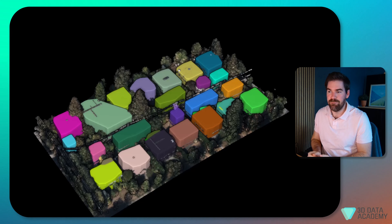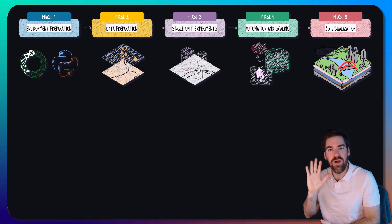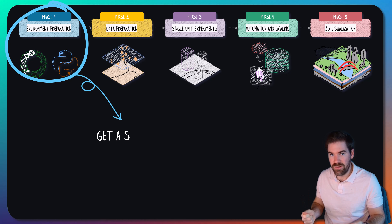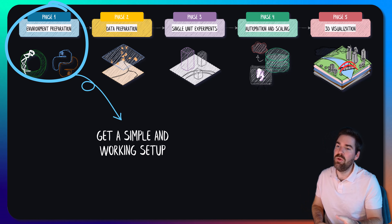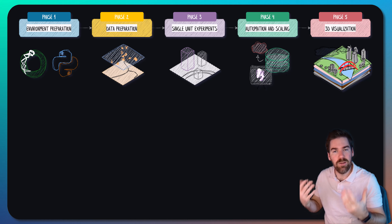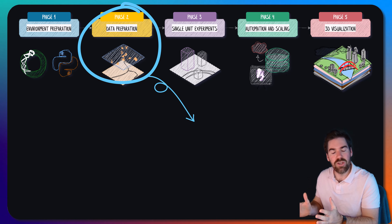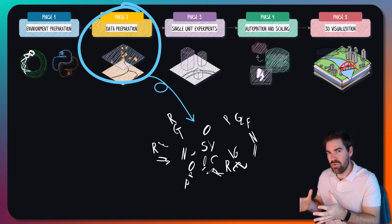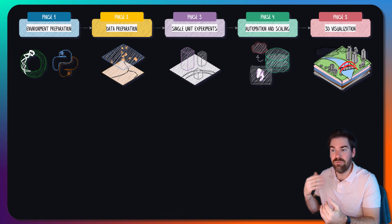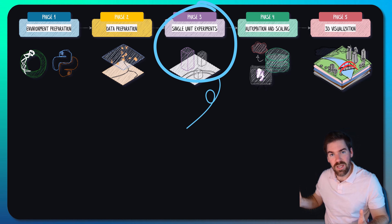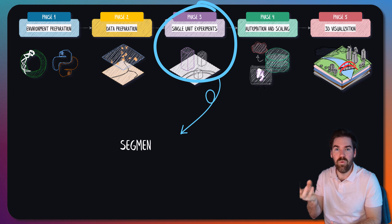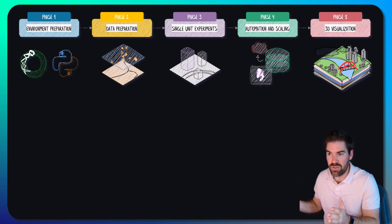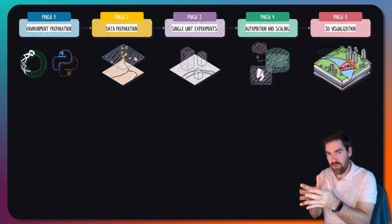What is the tutorial plan for today? As you can see, we are going to go through five main phases. The first is environment preparation, where we make sure you are equipped from scratch to attack this challenge. Then phase two is data preparation — a light progression. At the end of that, you should have data ready for phase three, the first set of experiments. We do not want to scale and automate at this stage — we just want to take one example, one building, and test if the full pipeline works.